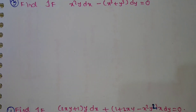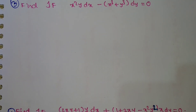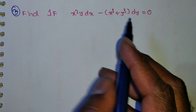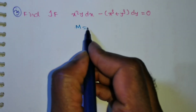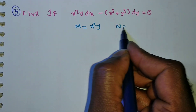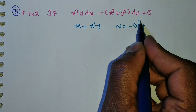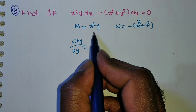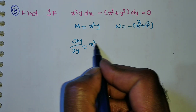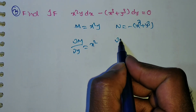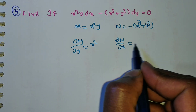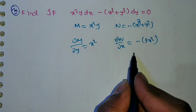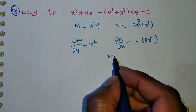Now the third problem: x²y dx − (x³ + y³) dy = 0. This is in the form of M dx + N dy. Write M = x²y and N = −(x³ + y³). Now ∂M/∂y: with respect to y, x² is constant, y derivative is 1, so ∂M/∂y = x². ∂N/∂x: with respect to x, y is constant, x³ derivative is 3x², so ∂N/∂x = −3x². Are both equal? No, so this is non-exact.